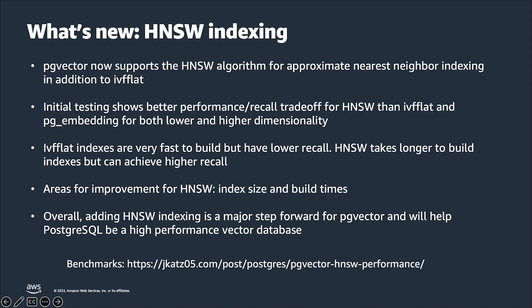The PG Vector 0.5 release was announced recently, with HNSW indexing as a major highlight, offering better performance compared to IVF flat. Our colleague Jonathan Katz has performed extensive benchmarks — his blog is linked for more details. In general, IVF flat indexes are fast to build but have lower recall. In contrast, HNSW takes longer to build but achieves much better recall. There are still areas for improvement around HNSW index size and build times, expected in future releases. Overall, adding HNSW is a major step forward in making Postgres a high-performance vector database.